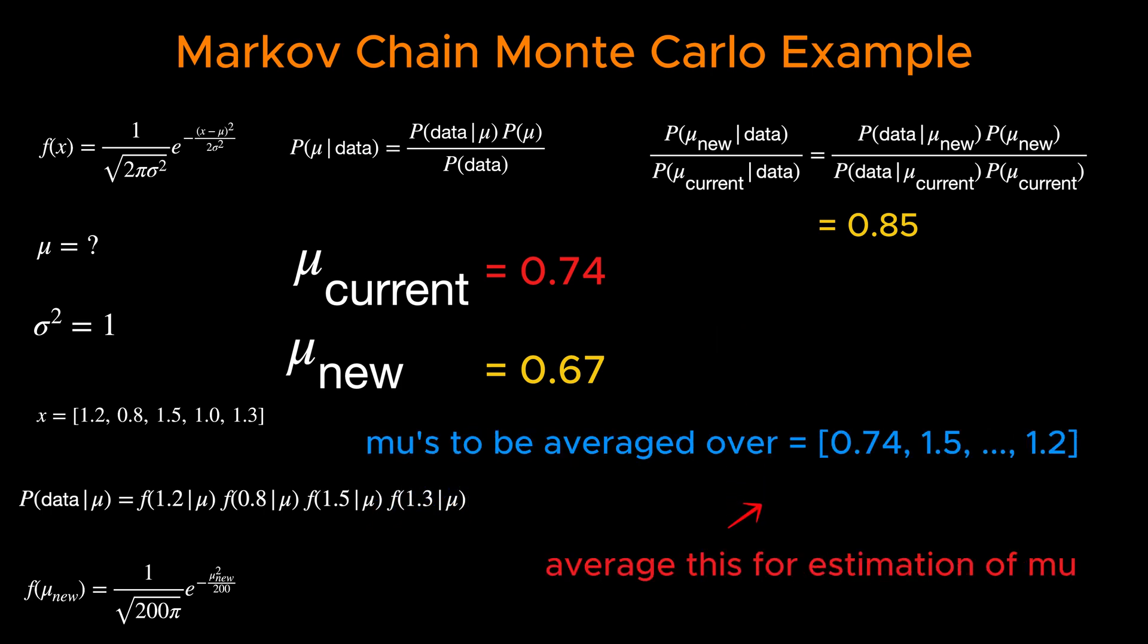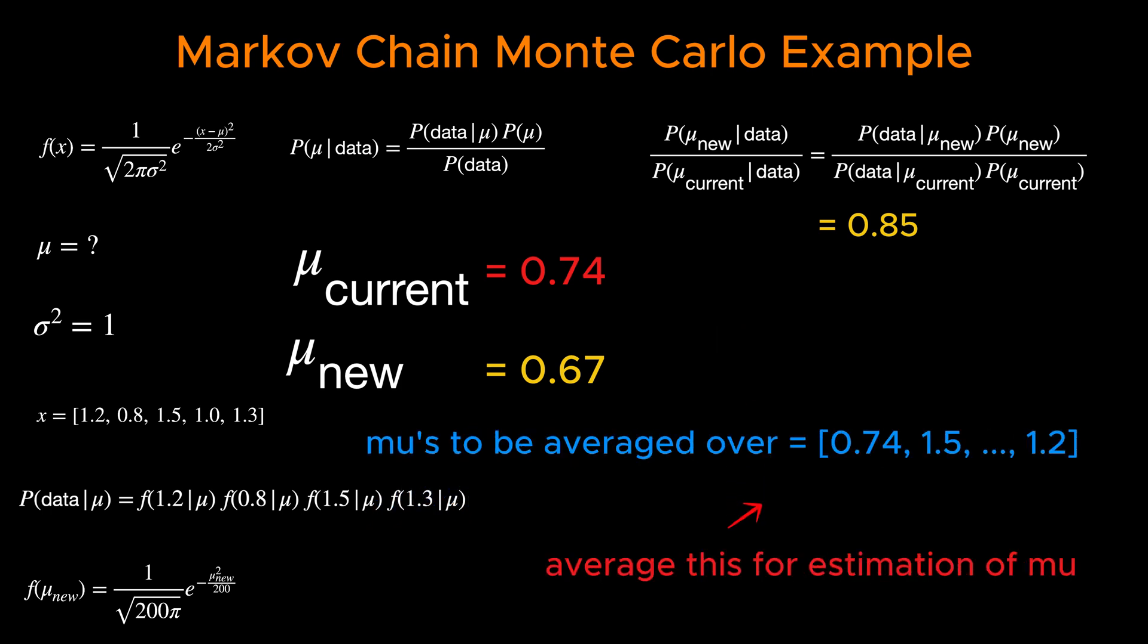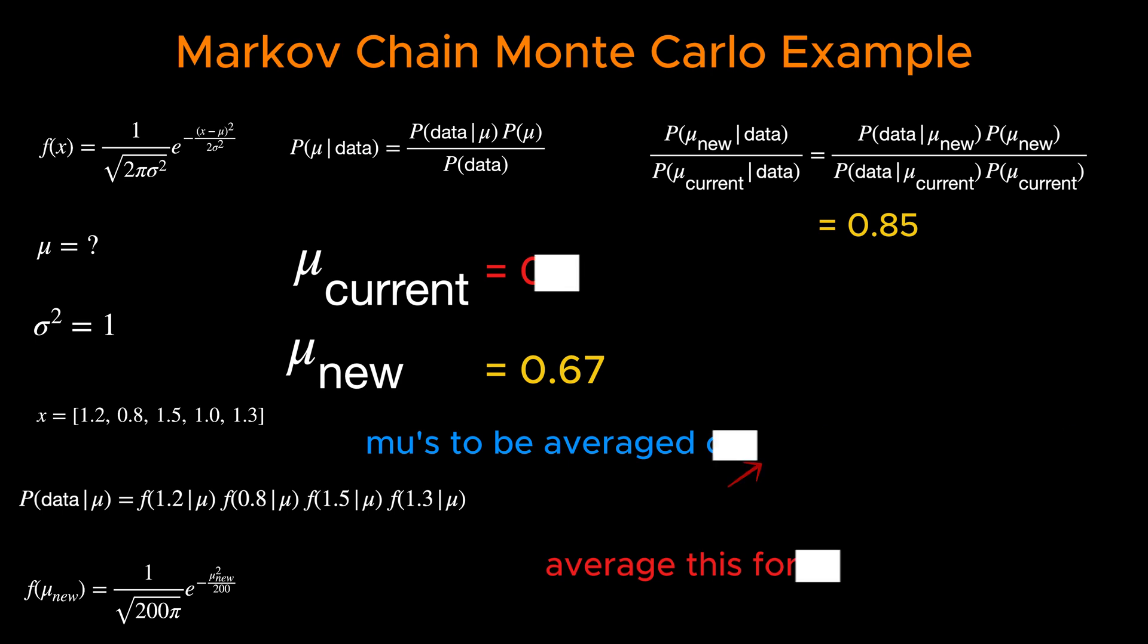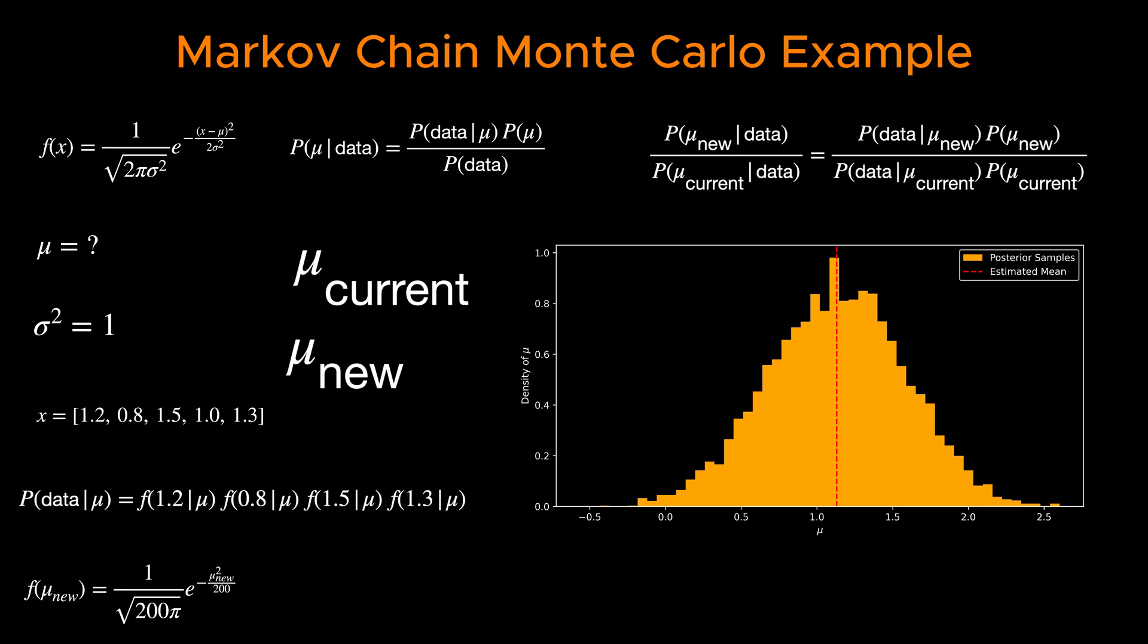At this point, we just need to repeat the whole process for another, say, 10,000 times. At the end, we take an average of all the accepted μ in the container and that would be our estimate for μ.